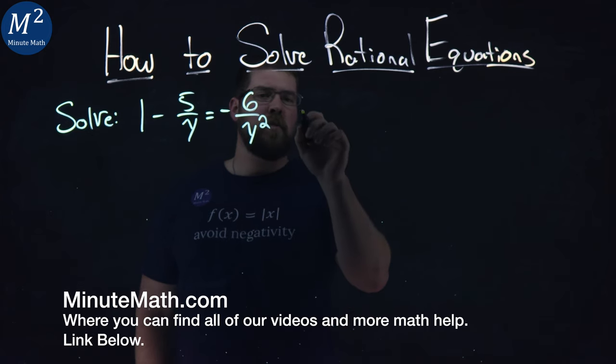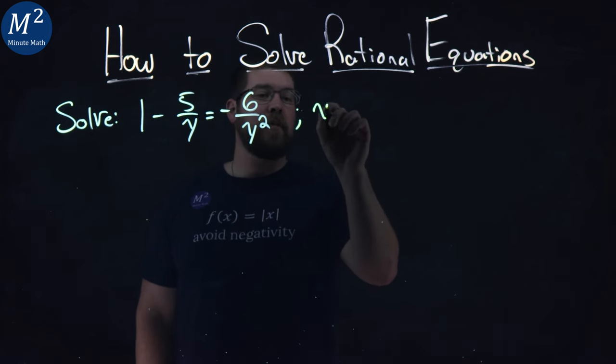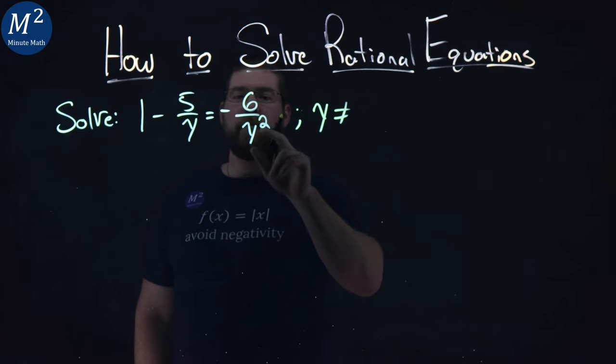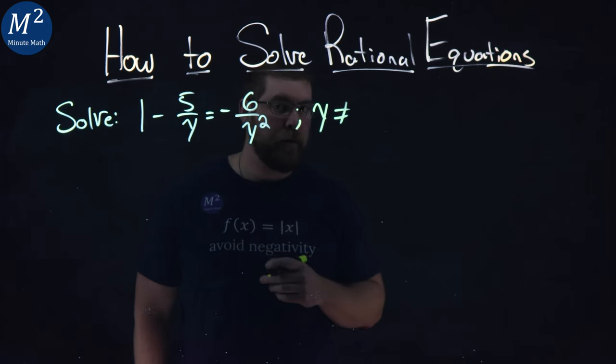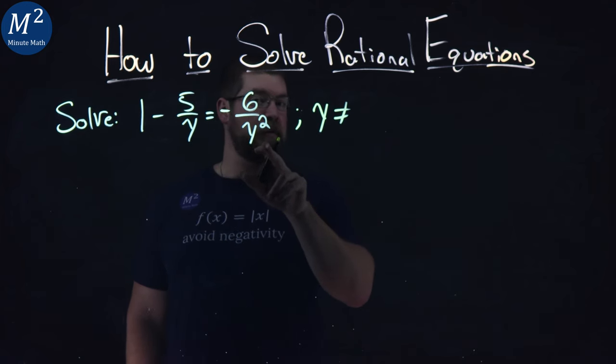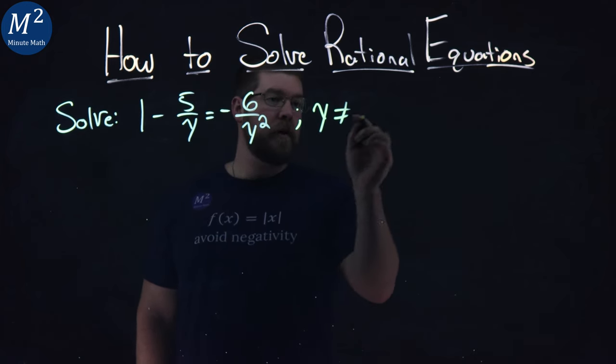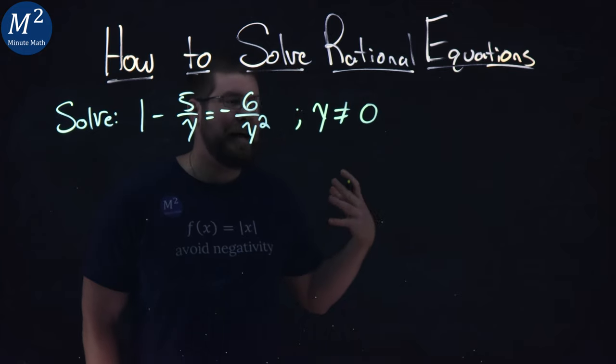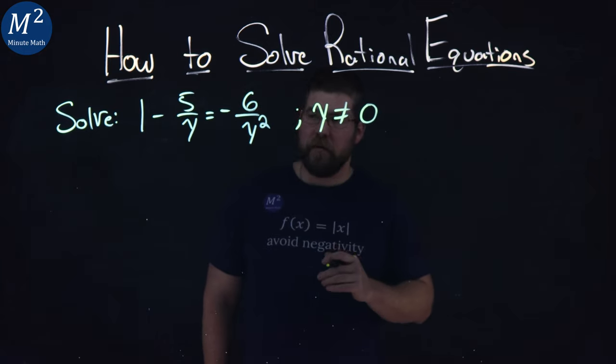Well, one thing I want to note here is what can y not equal? We're dividing by y and y squared. We know we can't divide by 0, and the only time we'll divide by 0 is when y equals 0 for both of these values. So we want to note that y cannot equal 0 right off the bat.